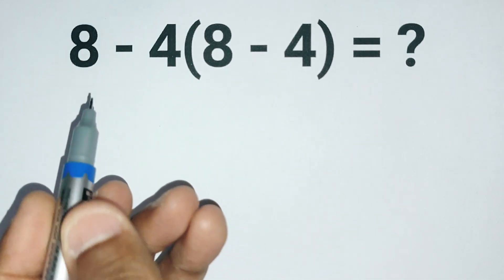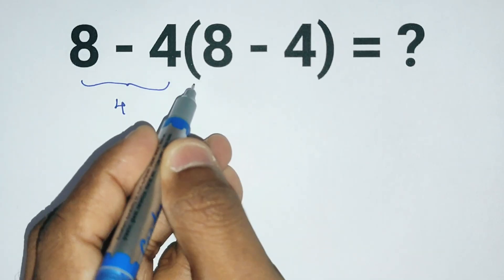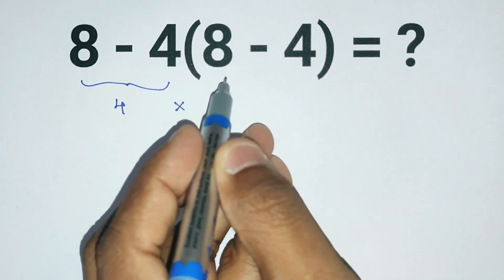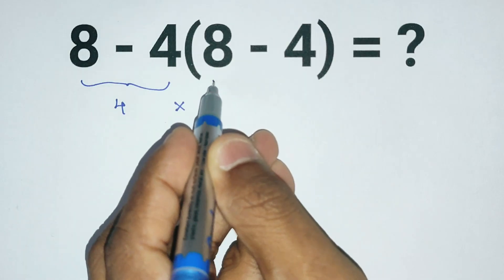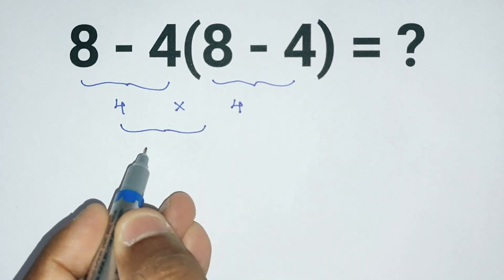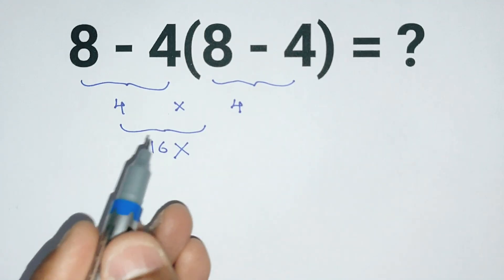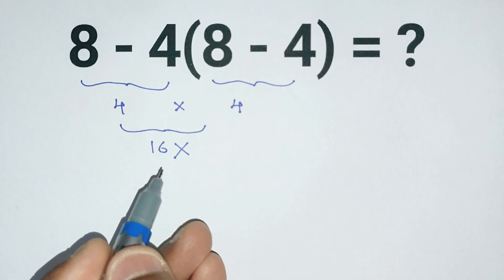So here 8 minus 4 equals 4, and we see parenthesis which means multiplication, and again 8 minus 4 which equals 4. So 4 times 4 equals 16, but this answer is not correct because we should follow the order of operations when solving expressions like this.